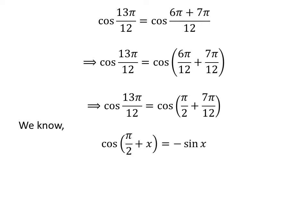We know the trigonometry identity cosine of pi upon 2 plus x is equal to minus sine of x. The proof of this trigonometry identity is given in the video appearing in the upper right corner of this video. The link of the video is also given in the description section.